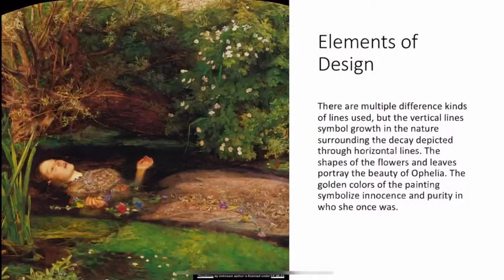There are multiple different kinds of lines used, but the vertical lines symbolize growth in the nature surrounding the decay depicted through horizontal lines. The shapes of the flowers and leaves portray the beauty of Ophelia. The golden colors of the painting symbolize innocence and purity in who she once was.